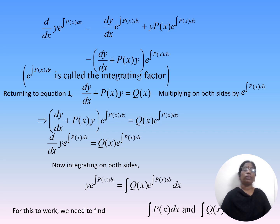For the general form dy/dx + P(x)·y = Q(x), multiplying both sides by the integrating factor e^(∫P(x)dx), the left-hand side becomes d/dx of [y·e^(∫P(x)dx)] = Q(x)·e^(∫P(x)dx). Integrating both sides gives the general solution: y·e^(∫P(x)dx) = ∫Q(x)·e^(∫P(x)dx) dx.